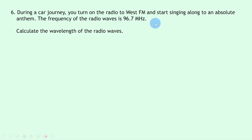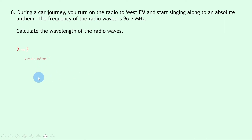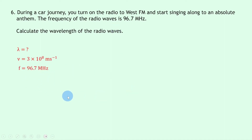Question six says: during a car journey you turn on the radio to West FM and start singing along to an absolute anthem. The frequency of the radio waves is 96.7 megahertz. Calculate the wavelength of the radio waves. Writing down what we know: we're trying to find the wavelength lambda; the speed of radio waves is 3 × 10⁸ meters per second since they travel at the speed of light; and the frequency f is 96.7 megahertz, which we convert to hertz: 96.7 × 10⁶ Hz.